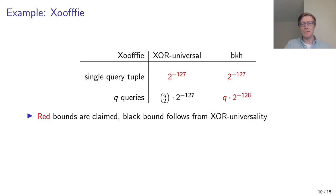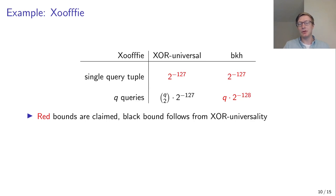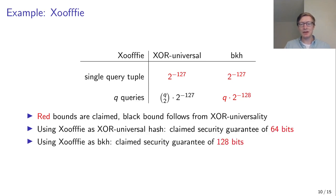A good example is Xoofff. For a single query tuple, Xoofff claims a security bound of 2 to the power of minus 127, and this holds in both the XR-universal model and the BKH model. But if we extend to Q queries using the XR-universal model, we only get a bound of Q-choose-2 times 2 to the power of minus 127. Xoofff has a dedicated claim for the BKH model, which is much better — namely Q times 2 to the power of minus 128. So using Xoofff as an XR-universal function gives only 64-bit claimed security, whereas using it in the BKH model improves this to 128 bits — a very significant difference.